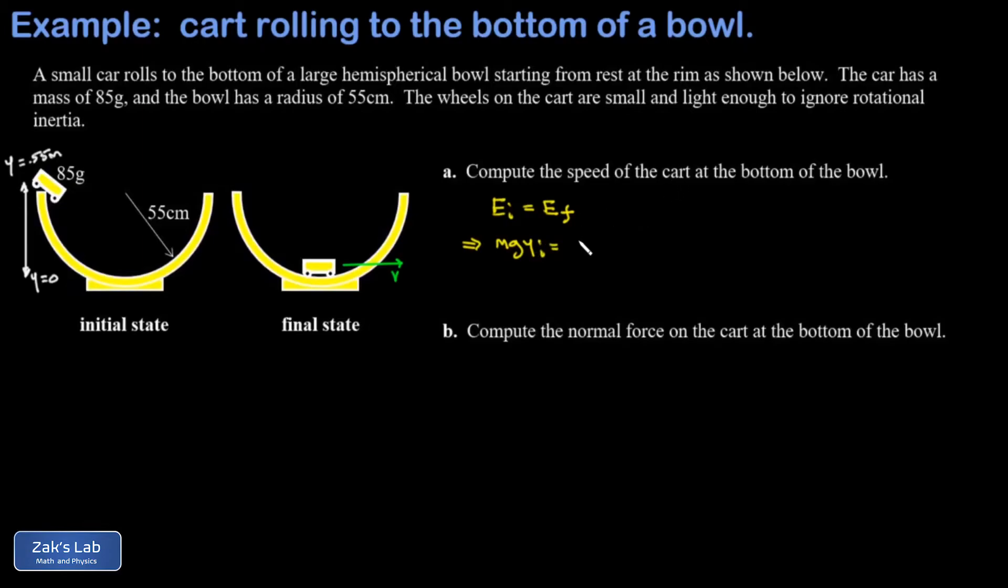So it's all kinetic and I get one half mv squared. Now the m's are going to cancel out of this and I get a classic answer. Multiply both sides by two and take the square root, and I find out that the speed is the square root of 2gy initial.